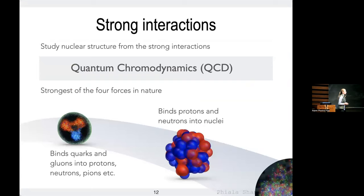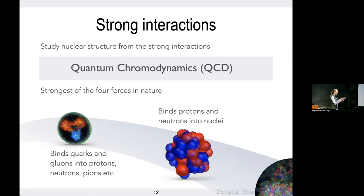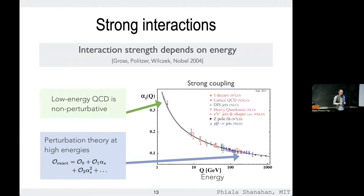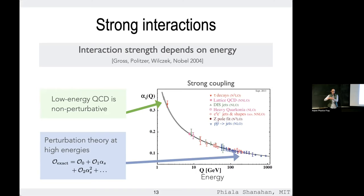First-principles studies of the Standard Model really means studying QCD, the theory of the strong interactions. QCD describes the strongest of the four forces — the strong interactions bind quarks and gluons into protons and neutrons, and bind protons and neutrons into nuclei. However, the strong interactions are difficult to study from first principles because the theory is non-perturbative at low energies. At high energies the coupling is small and you can use perturbative expansions, but moving to low energies the coupling becomes large and perturbative methods fail, leaving numerical methods as the only option.